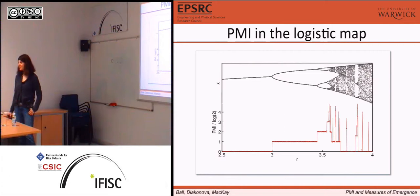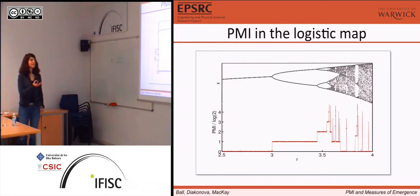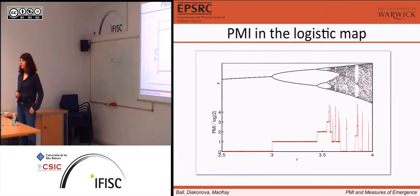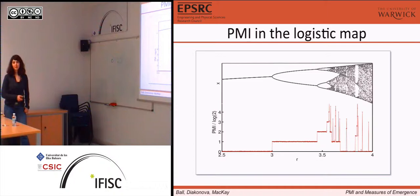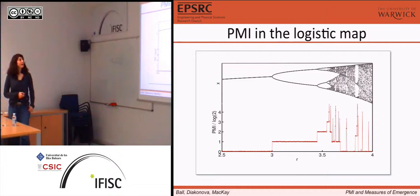So, the logistic map — a one-dimensional distributed dynamical system. The state space is between zero and one. We don't really need to see the formula of the logistic map; it's an iterative map with one parameter r. For r between zero and four, the state space is between zero and one. This is the bifurcation diagram of the logistic map. We see period doubling that accumulates at the period doubling accumulation point, and a chaotic side with some visible periodicities.